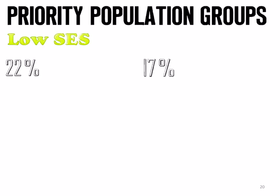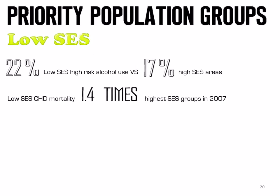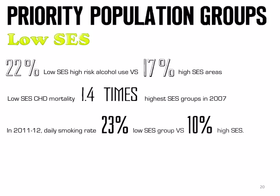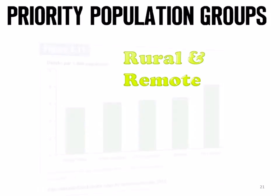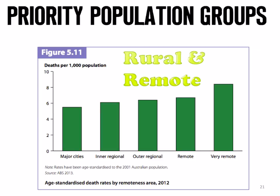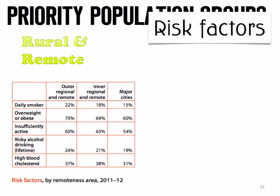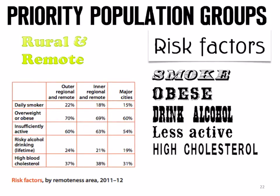Low SES is also a priority population group, with clear differences between low and high SES in health outcomes. The daily smoking rate is 23% for low SES versus 10% for high SES, and smoking contributes to a number of cancers and cardiovascular disease. For rural and remote communities, the more remote an individual is, the more likely they are to experience disease and a higher rate of death. Risk factors include daily smoking, obesity, alcohol consumption, physical inactivity, high cholesterol, and more likely having a risky occupation.